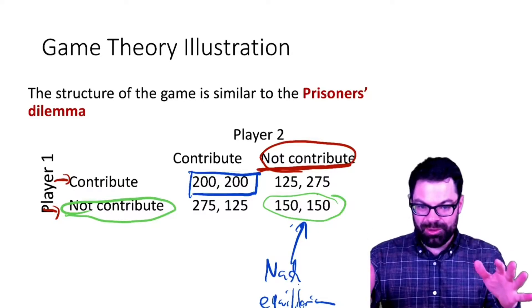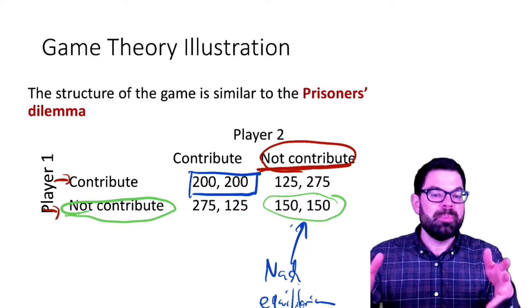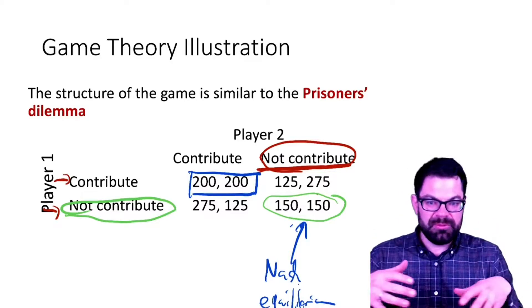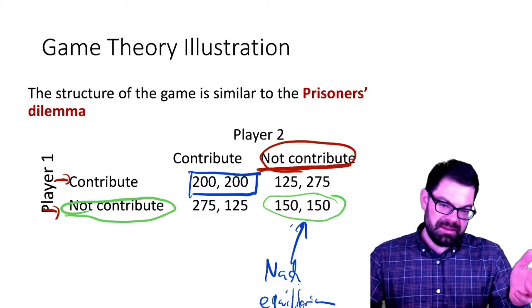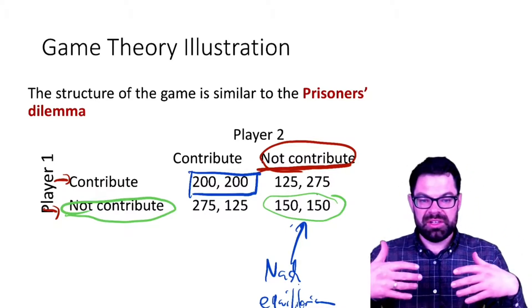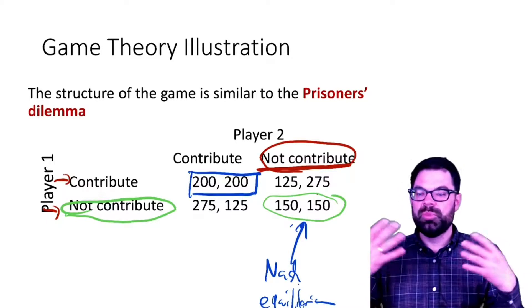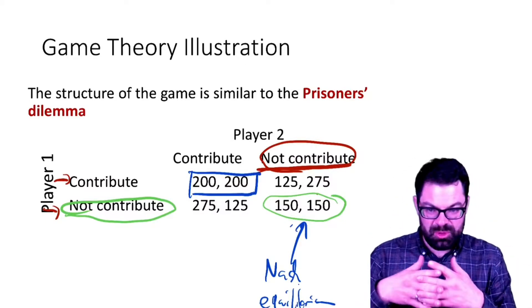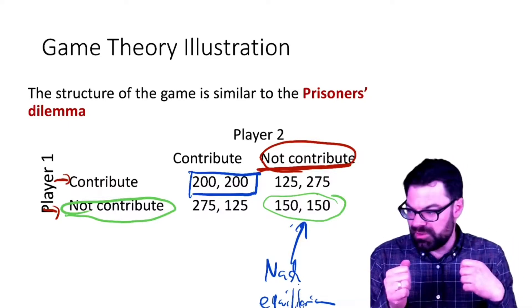For any public good this is what we should assume to be happening. Now people may differ in their altruism, and not in every situation they may actually choose not to contribute. There could be some prestige attached to contributing, there could be a stigma attached to not contributing.